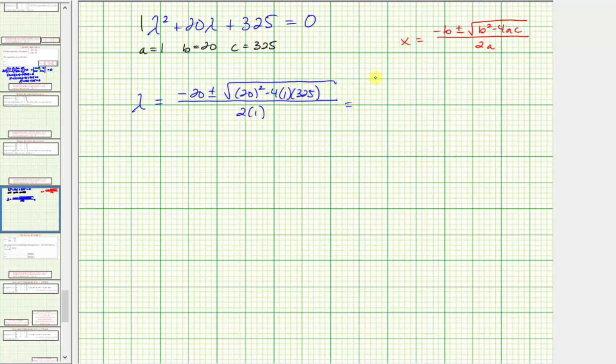So simplifying, here we have negative 20 plus or minus the square root of, this is going to be 400 minus 1,300, all divided by two. So lambda equals negative 20 plus or minus the square root of negative 900, divided by two.